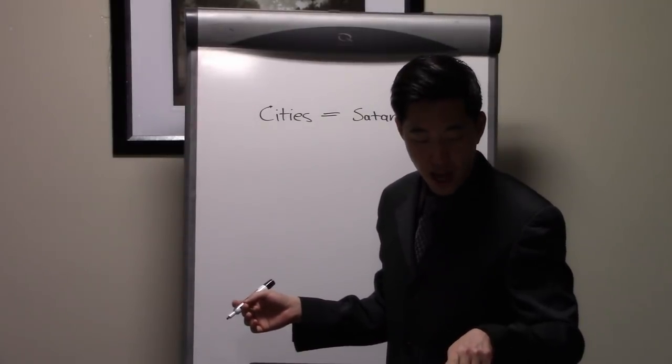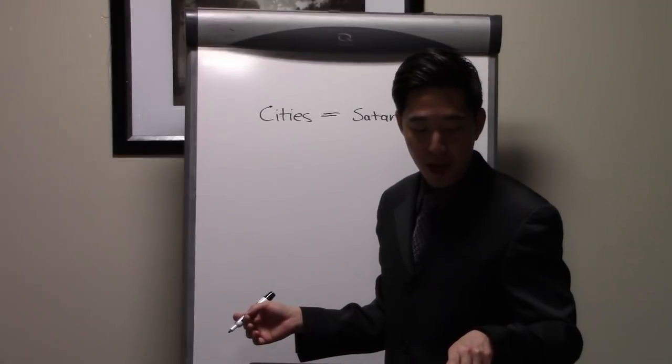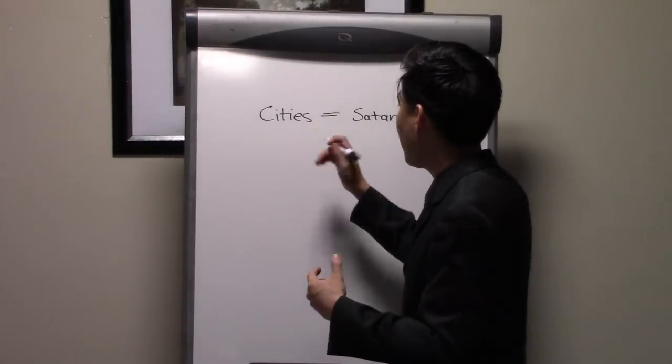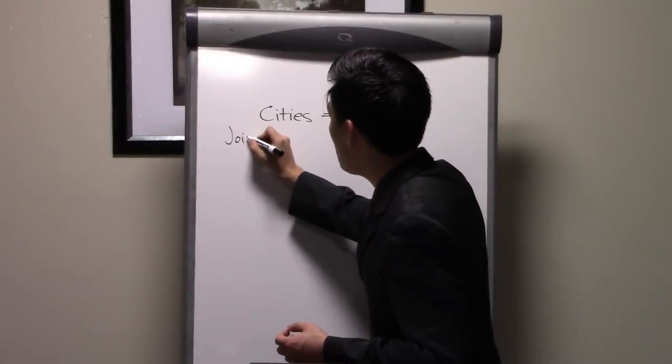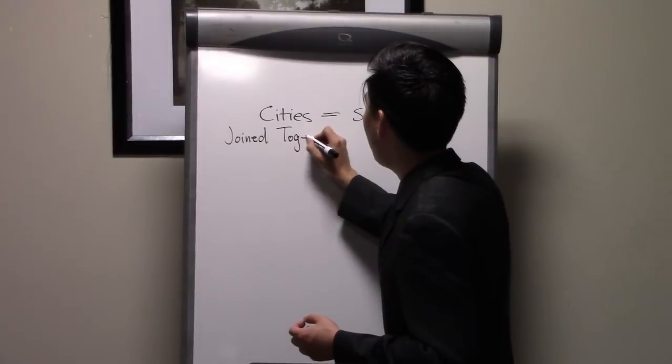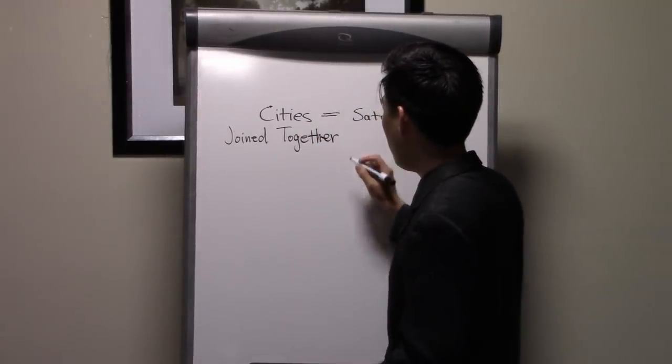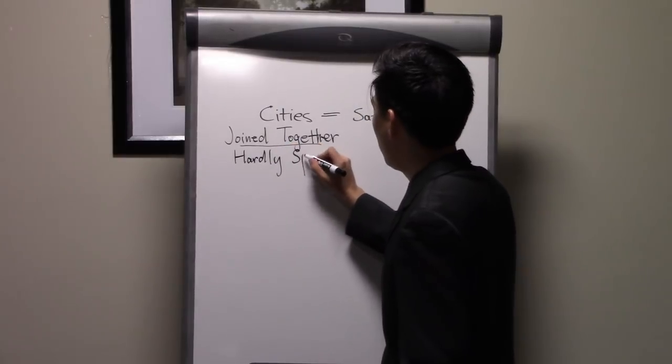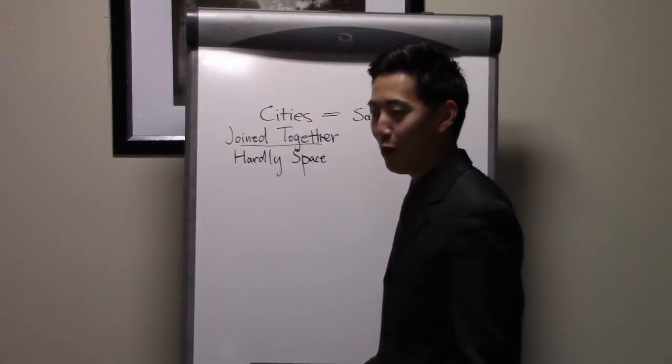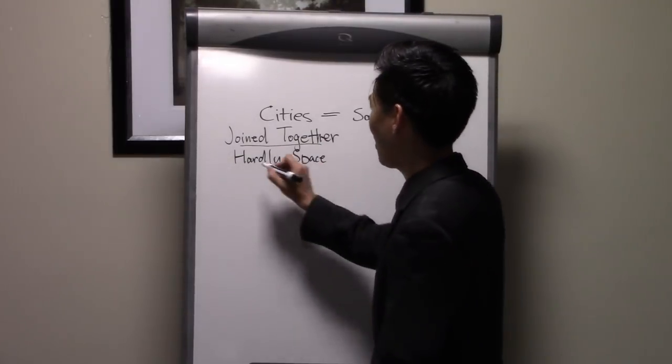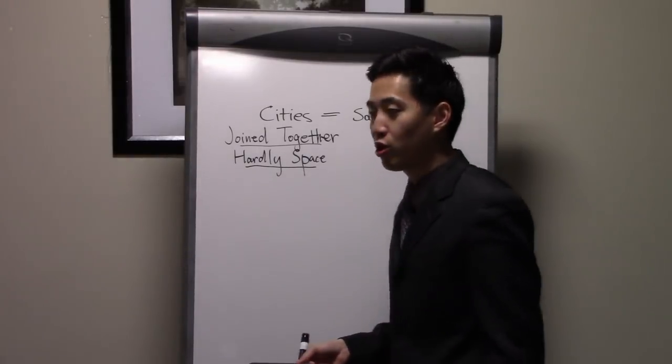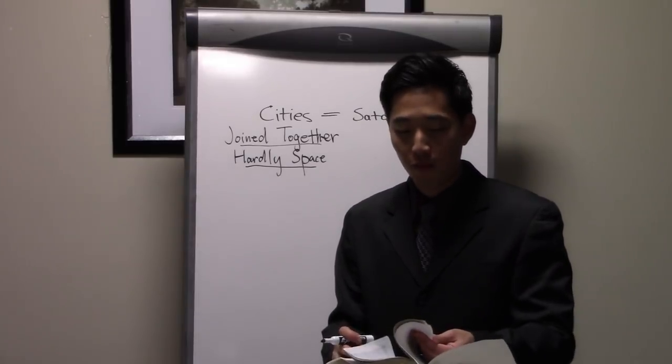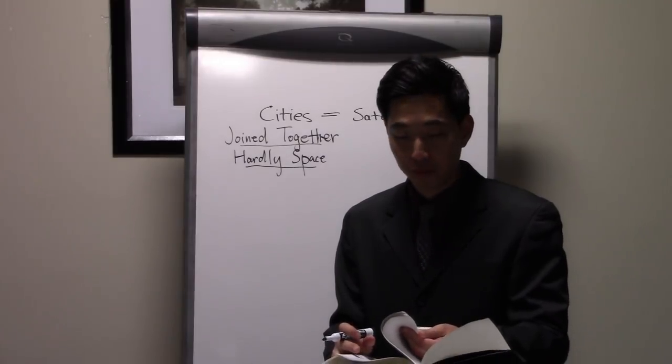We see right here in the Bible that God hates cities at Isaiah chapter 5, verse 8. Notice right here: woe unto them that join house to house, that lay field to field, till there be no place, that they may be placed alone in the midst of the earth. So notice God hates it when houses and buildings are joined together, and when they are joined together, that there's hardly what? Field, space in between. Go to Genesis chapter 4, verse 17.